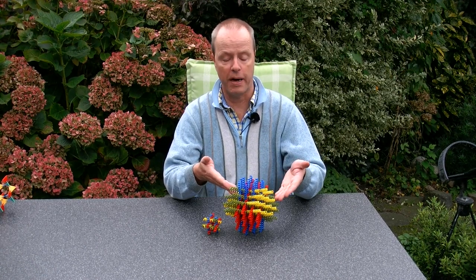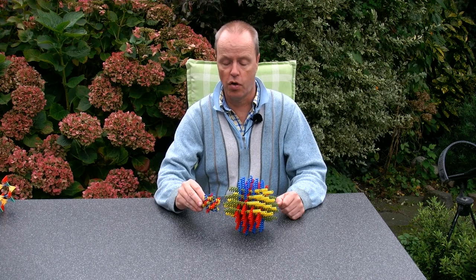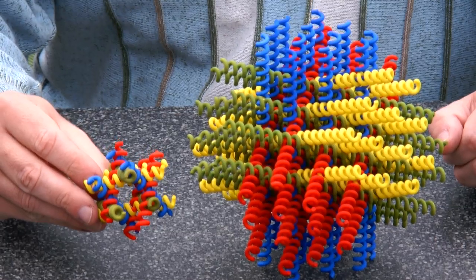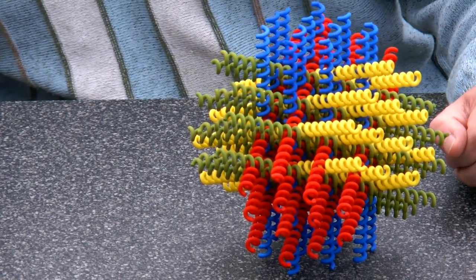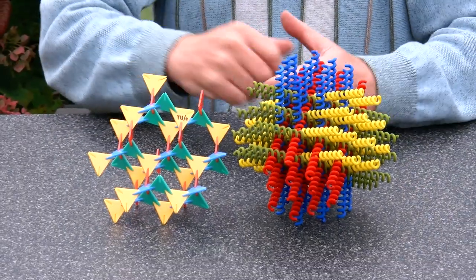Hi, I'm Oscar van Deventer and these are the bamboozle spirals extra large. They are a large version of the bamboozle spirals that I presented earlier. Actually the name bamboozle was named after this structure by Tom and Koos for Hoof.